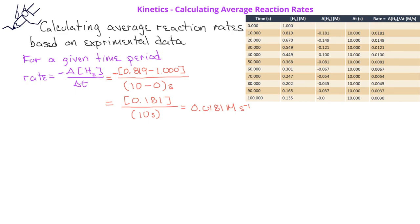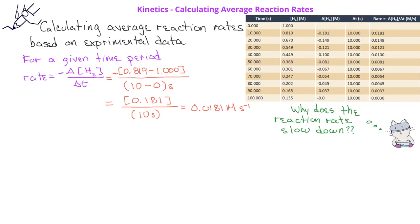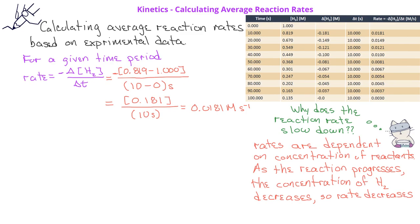Why would this take place? We would expect this because we learned in a previous video that the rate of a reaction is based on the concentration of the reactants. When we began the experiment at 0 seconds, we had a concentration of the hydrogen reactant of 1 molar. But at 40 seconds, the initial concentration of hydrogen is just 0.449 molar. Since we have a lower concentration at 40 seconds, the rate from 40 to 50 seconds will be slower than the rate from 0 to 10 seconds.